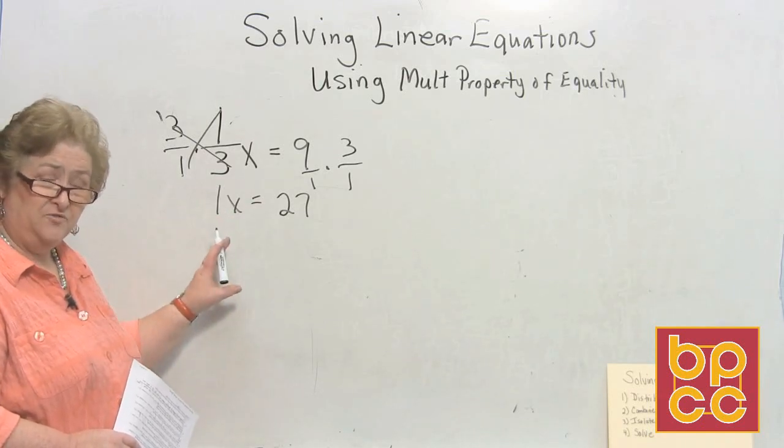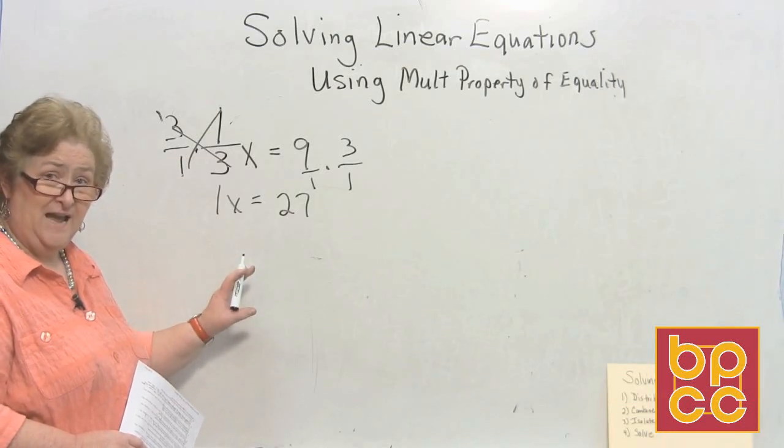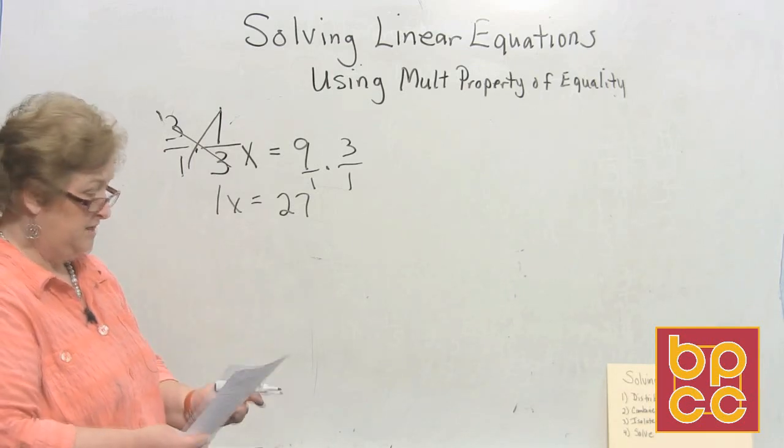So each time you see a fractional x equals something, we're going to multiply by the reciprocal. If it's positive, positive reciprocal. If it's negative, negative reciprocal. Because each time it will turn into a positive 1x, which is what we want to happen. Let's try another one.